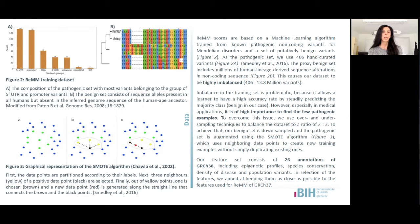However, especially in medical applications, finding the few pathogenic examples is of interest. So we use over and under sampling techniques to balance our dataset. We use the SMOTE algorithm for augmentation of the pathogenic data with new data points without simply copying them. You find more information on that on the poster. And we subsample the benign set so that the ratio between the pathogenic and benign examples in the training set is around 2 to 3.